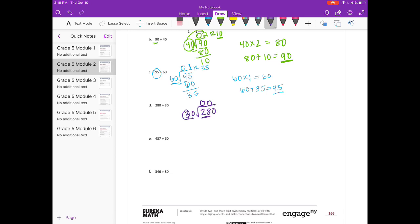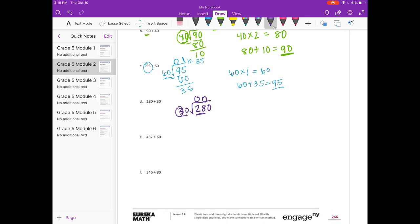So 3 times 8 is 24. It could probably go in another time. 3 times 7, or 3 times 9 is 27. And 3 times 10 is 30, which would be too big. So it can go in 9 times. 9 times 30 is 270. If we subtract, we get 10. So it's 9 remainder 10.